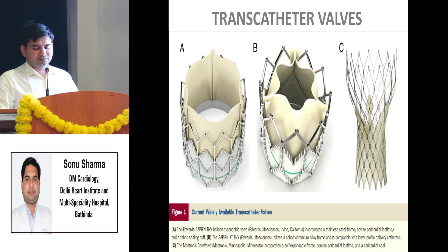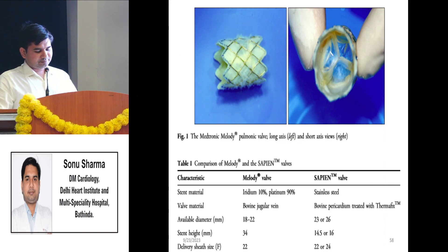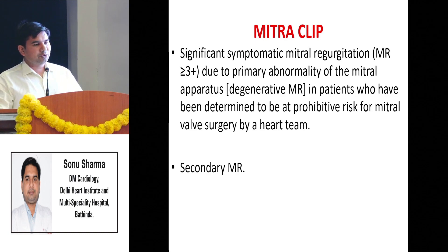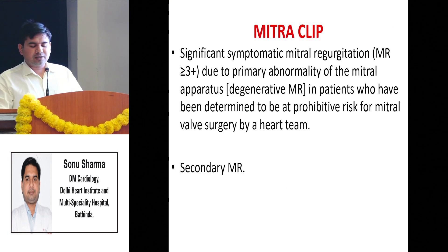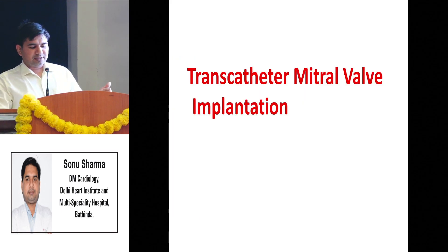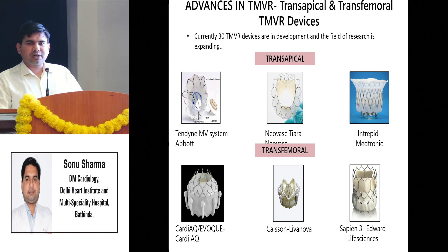This is how the TAVI valve looks like. For pulmonary stenosis or pulmonary regurgitation we can perform transcatheter pulmonary valve implantation. For mitral regurgitation we have the MitraClip, recommended for significant symptomatic MR due to primary abnormality of the mitral apparatus in patients with prohibitive or high surgical risk. We go with a MitraClip to reduce mitral regurgitation. There is also upcoming transcatheter mitral valve implantation, with various mitral valves available for transcatheter delivery.